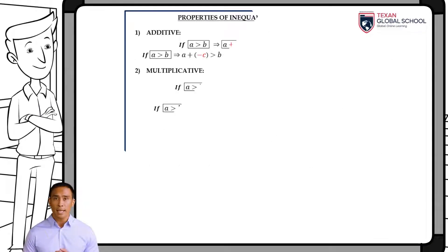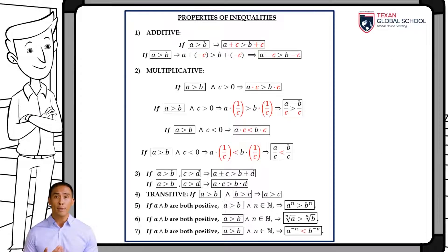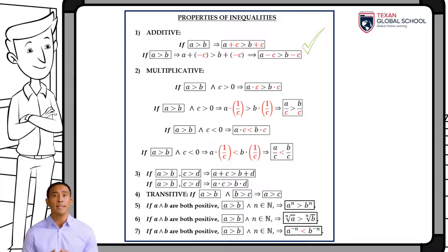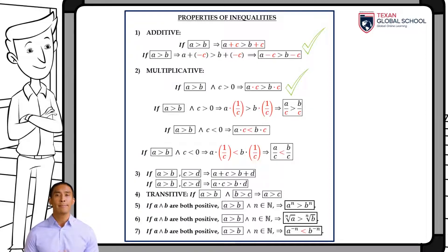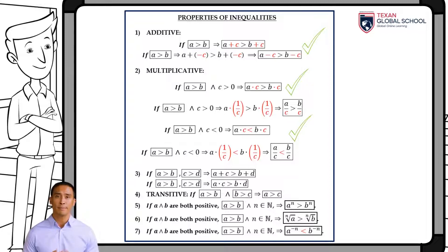As with equations, properties of inequalities are presented. The additive property indicates that we can add or subtract any value on both sides of the inequality without reversing its sign. The multiplicative property indicates that if we multiply or divide by any positive value, the inequality sign does not change. However, if we multiply or divide by any negative value, the inequality is reversed. We can also add or multiply member by member two inequalities with the same sign, thus obtaining an inequality with the same sign.